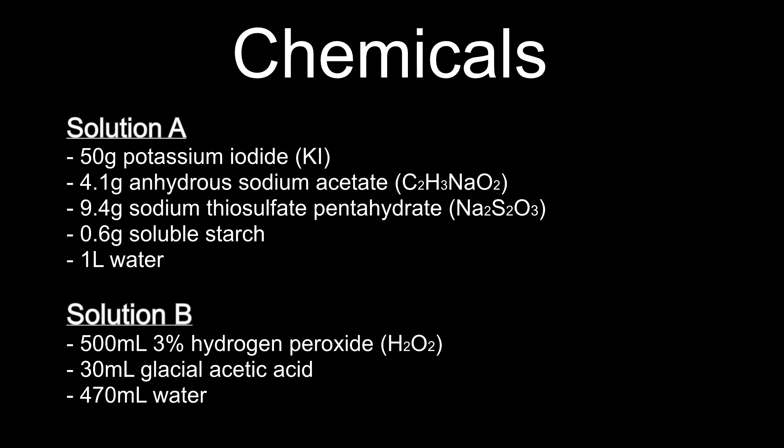Solution B is much easier to make, and only contains 500 milliliters of 3% hydrogen peroxide, 30 milliliters of glacial acetic acid, and an additional 470 milliliters of water.